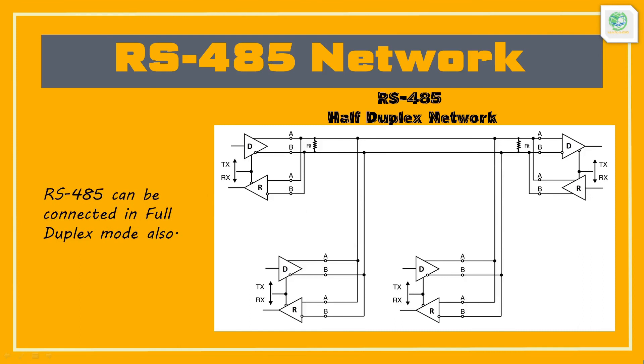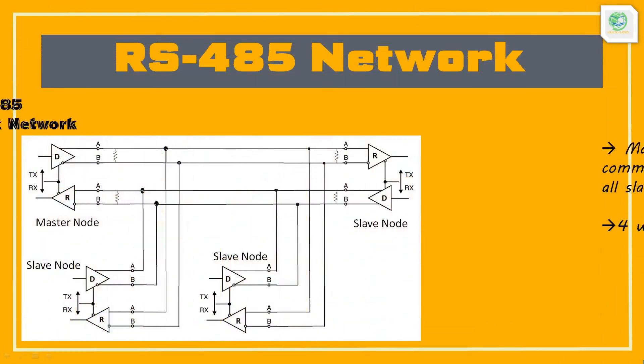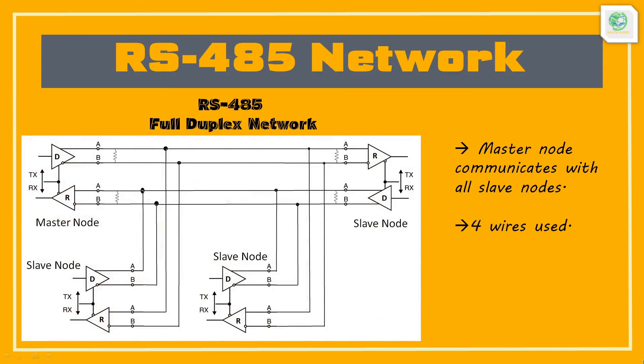RS-485 can also be connected in full duplex mode using 4 wires. In a full duplex type of connection, it is necessary that one node is a master node and all others are slaves. The master node communicates to all slaves, but a slave node can communicate only to the master. Two wires are for transmission from the master node and two wires are for reception at the master node. Terminating resistors are again installed on the two farthest terminals.